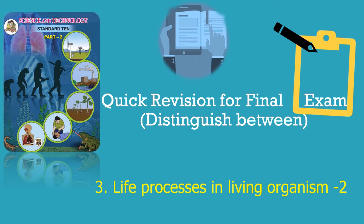Welcome to Learner's Academy. Today I am covering Distinguished Between from Chapter 3 of Science 2, i.e., Life Processes in Living Organism Part 2, in the Quick Revision Series. I'll be giving you the best notes, and if you go by these notes, I assure you can score above 95% in science. Stay focused throughout the session and let's get started now.